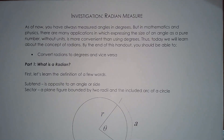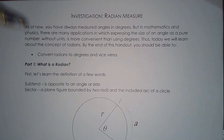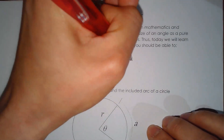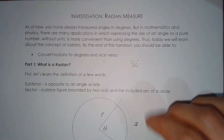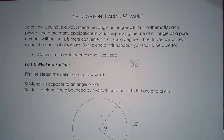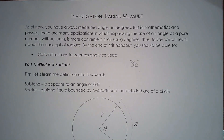Unfortunately, there's a big disadvantage to degrees, because there is no mathematical basis for degree measure. One of the key angles you should know is 360 degrees — that is one full revolution. When you think of 360 degrees, that is one full revolution of a circle.